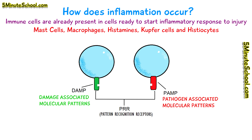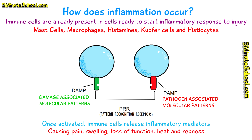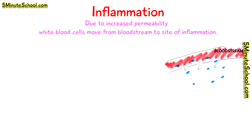Once the immune cells are activated, they release inflammatory mediators. We then have the effects mentioned above: loss of function, swelling, pain, heat and redness. Another thing that happens, due to increased permeability at the site of inflammation, is the movement of white blood cells to the location of inflammation to aid in fighting off any pathogens.